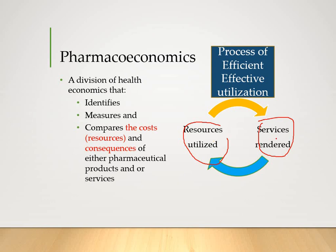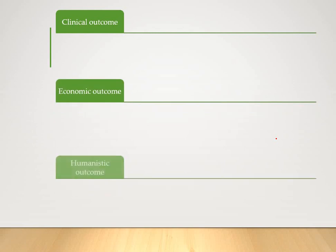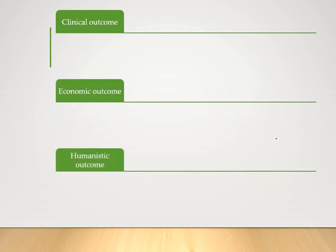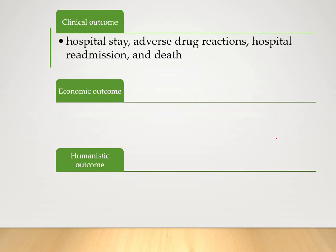Now, there are different types of outcomes once you provide a particular type of pharmacotherapy. The outcomes may be clinical, economic, or humanistic. The clinical outcome includes hospital stay of the patient, adverse drug reactions, or untoward reactions.